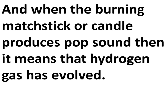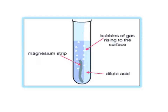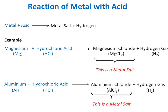In this diagram, you can see a magnesium strip - magnesium is a metal. When you add dilute acid, bubbles form, and those bubbles are actually hydrogen gas being released. This is how metals work with acids. The general formula is: metal + acid gives a metal salt and hydrogen gas.